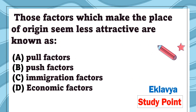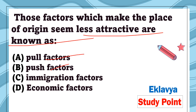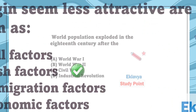Question 8: Those factors which make the place of origin seem less attractive are known as — this is the opposite of the previous pull factors question. Option A: pull factors, option B: push factors, option C: immigration factors, option D: economic factors. The correct answer is push factors.